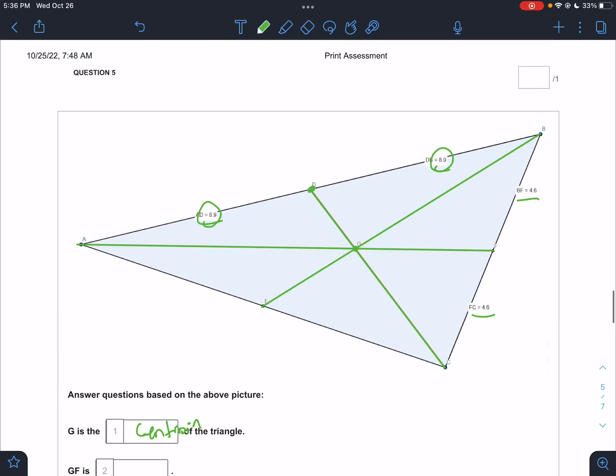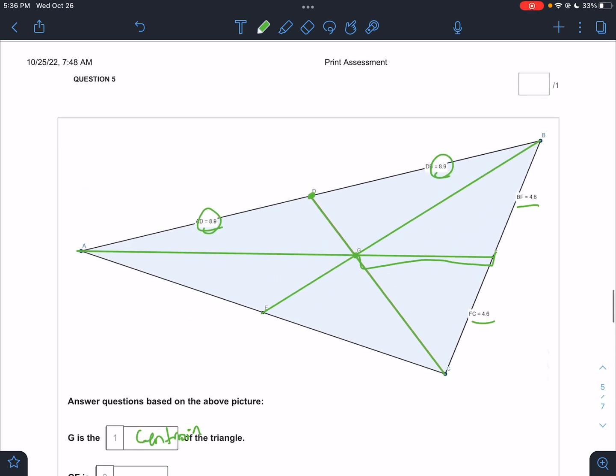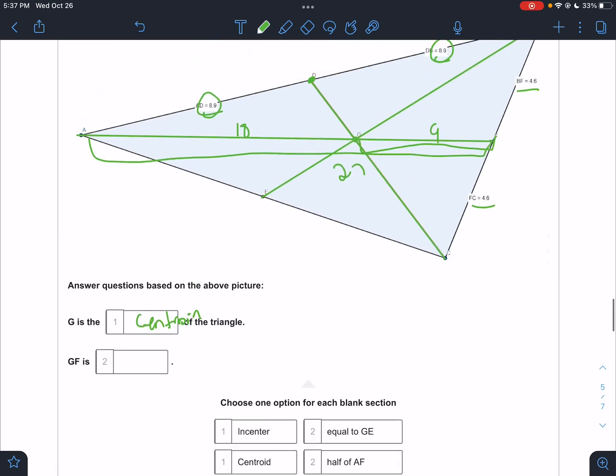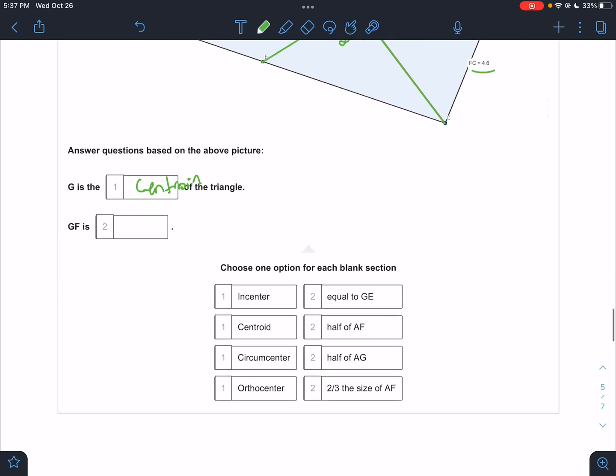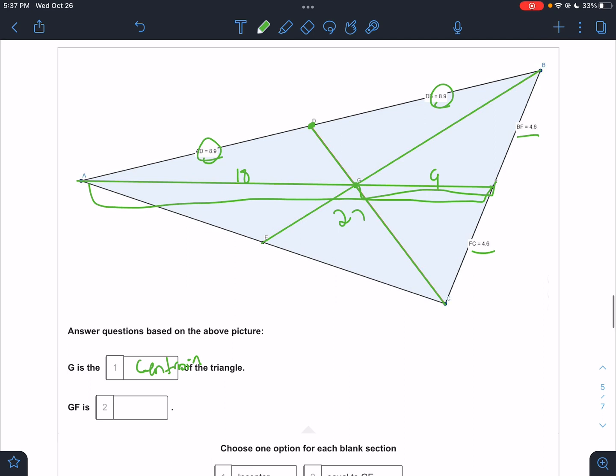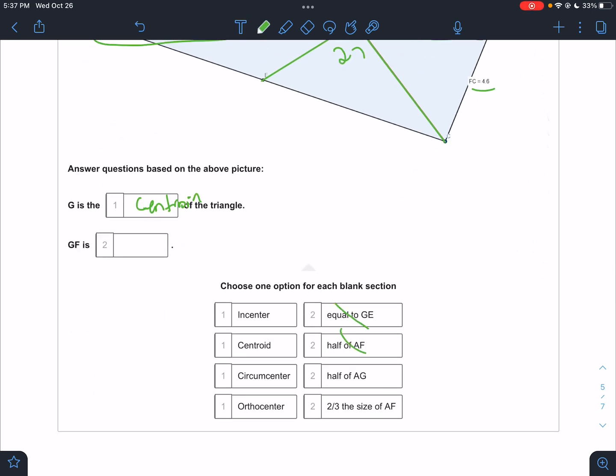And GF, where is GF? This distance. So I don't know what they're asking, but GF. We talk about this in class, but let's pretend GF is like 9. That means GA would be 18 because GF is half of GA, and the whole thing would be 27. So let's see what our options are. GF is equal to GE. No, we don't know that. Is half of AF. No, it's a third of AF. Let me make sure. Yeah. So GF is a third of AF, so no. Half of AG.